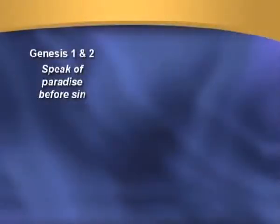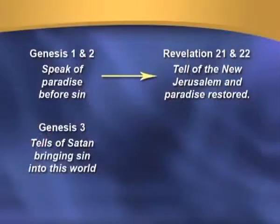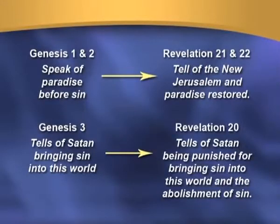The Bible itself is written in this chiastic form. Genesis 1 and 2 speak about the world — paradise before sin — pointing toward Revelation 21 and 22, the new Jerusalem and paradise restored. Genesis chapter 3 tells of Satan bringing sin into the world, and the third-last chapter of the Bible, Revelation 20, speaks about Satan being punished for sin and the abolishment of sin. So 1 speaks to 22, 2 speaks to 21, and 3 speaks to Revelation 20.